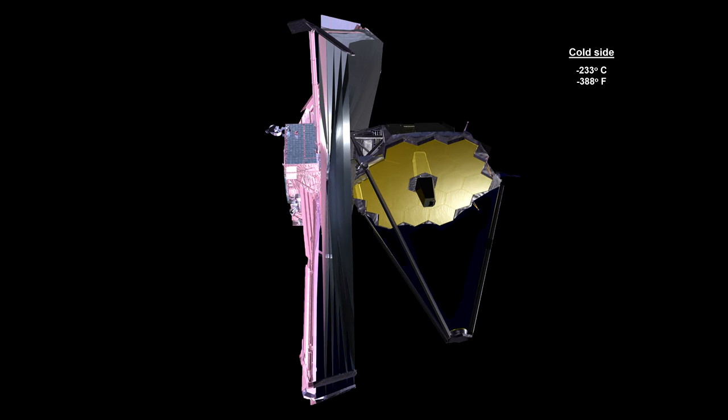It operates at 233 degrees below zero Celsius. That's minus 388 degrees Fahrenheit. That's cold enough to freeze nitrogen. The shield can protect against temperatures on its hot side as high as 85 degrees Celsius. That's 185 degrees Fahrenheit, a little under the boiling point for water.